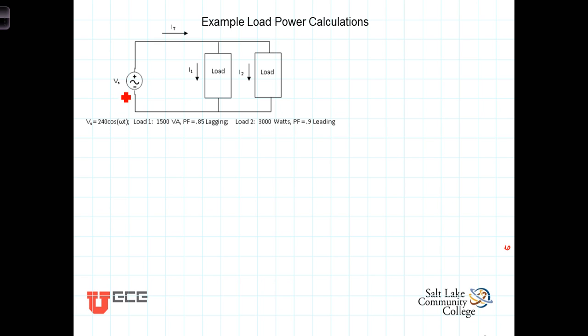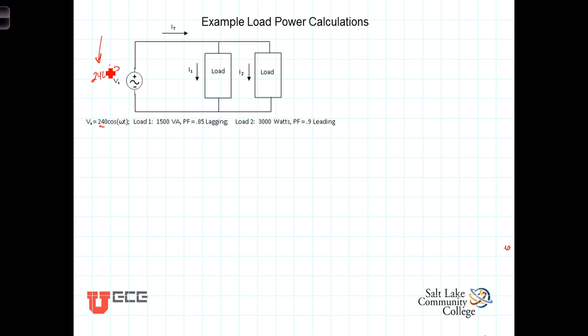Here we're told that our source is a 240-volt source, 240-cosine-omega-T. Unless specified otherwise, we're going to assume that the voltage rating is in effective volts, so that this is 240 angle 0, where that is the RMS value. Any time you're given 120 volts, 240, 277 — all of these are standard effective voltage ratings for different standard voltages available from the power company.